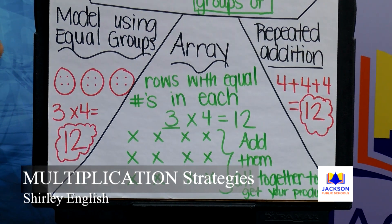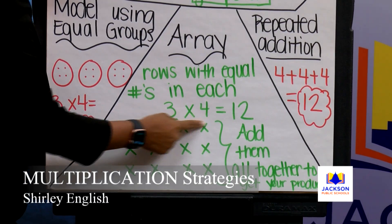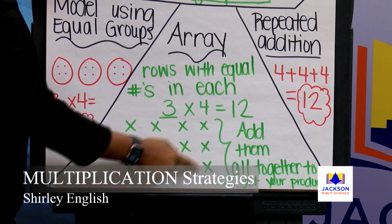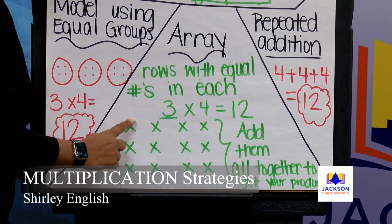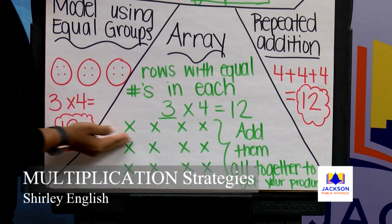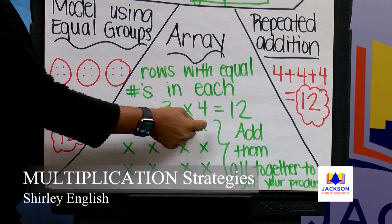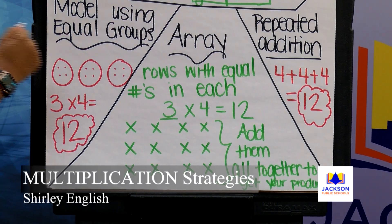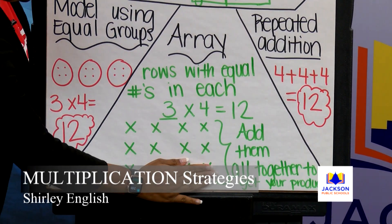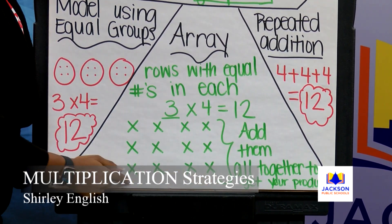The last strategy is called using an array. With an array, we use rows and columns to show our product. Your rows are going across and your columns are going up and down. Your first number tells you how many rows. So I draw one X to represent my row and put four objects in each row — one, two, three, four. Remember that arrays have to have equal groups. You cannot have one row with one X in it and the others with four; they all have to have the same number of X's in each row.